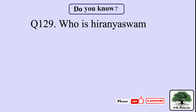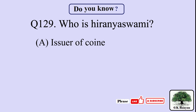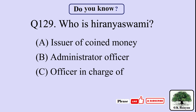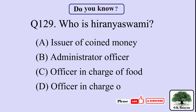Question 129. Who is Hiranyaswamy? Your options are: A. Issuer of Coin Money, B. Administrator Officer, C. Officer in charge of Ford, D. Officer in charge of Jewelers.